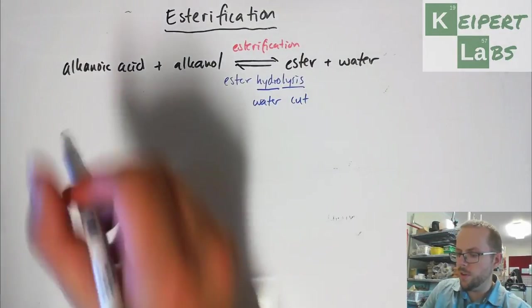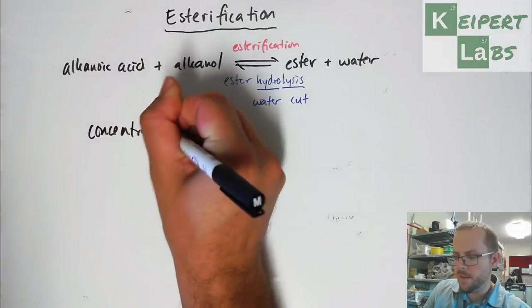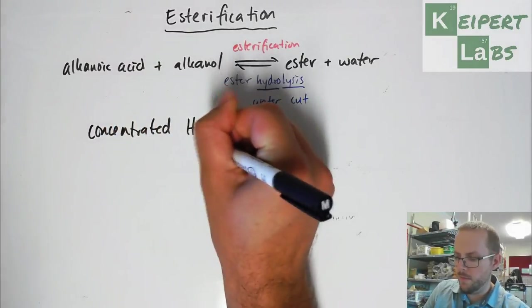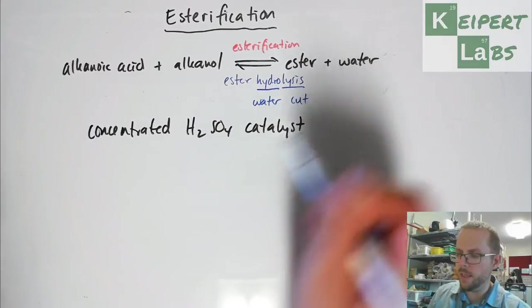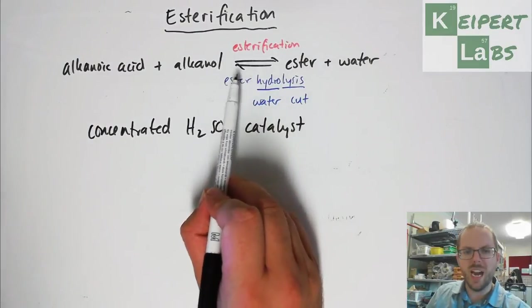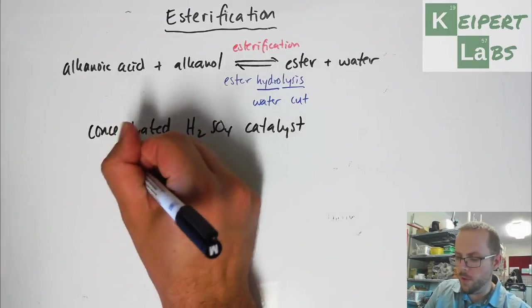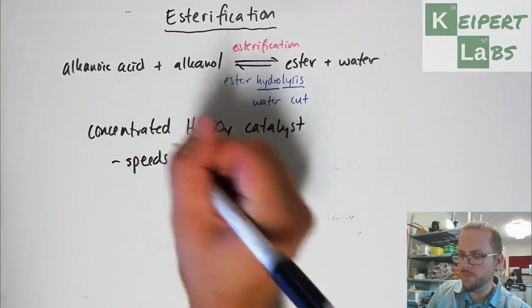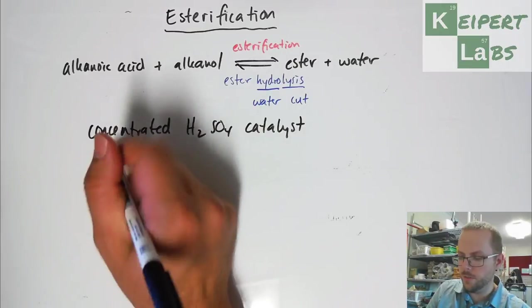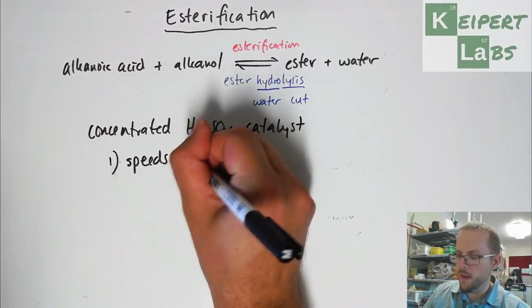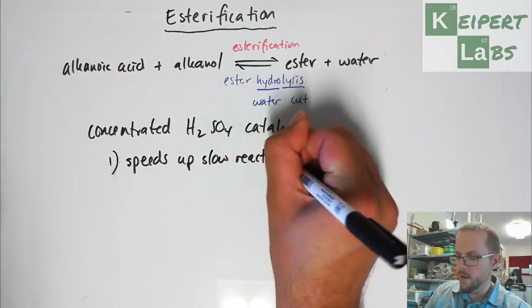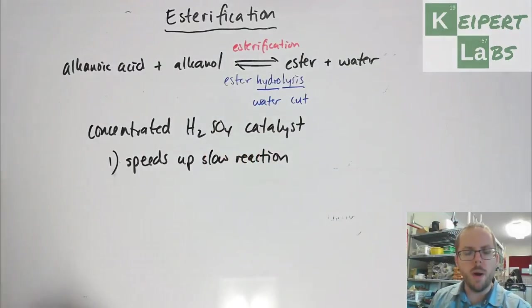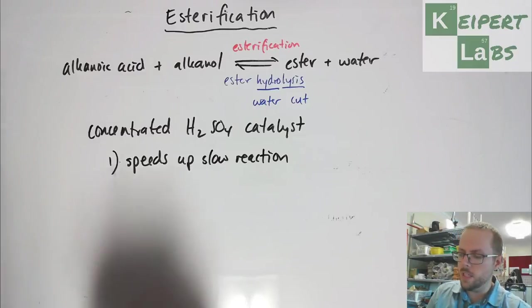What we also use is a concentrated sulfuric acid catalyst. Because what we recognize is that we talked before that this reaction is very slow. So this acid performs two functions. It speeds up the slow reaction. So it might take less than an hour as opposed to taking eight hours to occur. It speeds up the slow reaction.